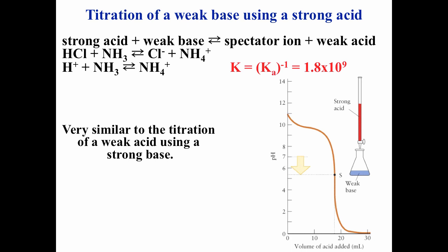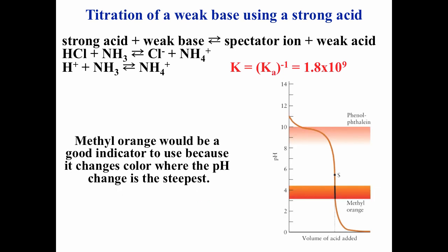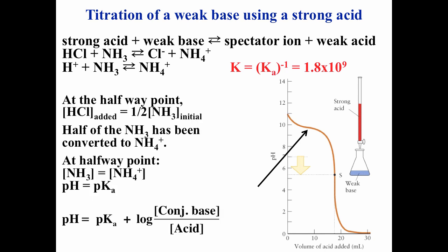For titrating a weak base using a strong acid — for example, titrating ammonia with HCl — you form Cl⁻ and ammonium ion. At the equivalence point, Cl⁻ is neutral but NH₄⁺ is a weak acid (conjugate of weak base), so the solution is acidic and the pH is less than 7. Methyl orange would be a good indicator choice. At the halfway point, you have equal concentrations of NH₃ and NH₄⁺ — a buffer region — and the pH equals the pKa.